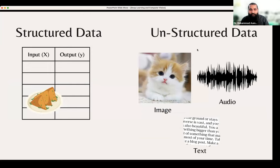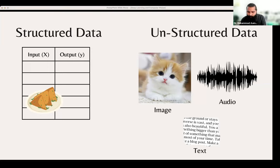Structured vs unstructured data: if your data is in a dataframe with X and Y columns that you can quantify and write simply, that is structured data. The second type is unstructured data — for example, an image is data. As I explained in the Computer Vision lecture, an image has X and Y coordinates, and pixels have RGB values we count.